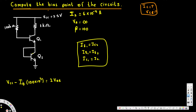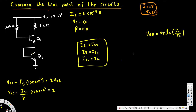Instead of IB, we can substitute IC/β, since β = 100. So the equation becomes: VCC minus (IC1/β) times 100kΩ = 2*VBE. And instead of VBE, we use the formula VBE = VT * ln(IC/IS), so we substitute that in for VBE as well. VT is a constant equal to 26 mV.